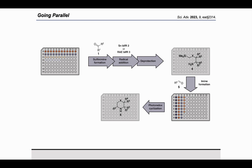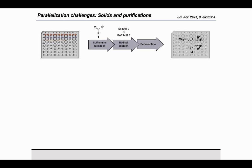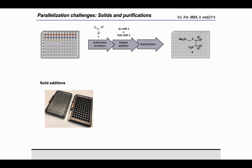We evaluate the reactions by LCMS to determine the reaction outcome, and we also purify the compounds. One of the challenges in parallelization is adding solids. We use cesium carbonate in the sulfenamide formation and zinc nanoparticles in the radical addition. To dose them, we use custom-made plates: we fill the entire plate with the solid, knowing how much goes into each well, then slide out the sliding bottom so the contents drop directly into the wells — a simple but elegant way to add solids to a 96-well plate.